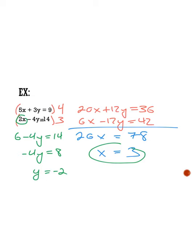Now that I have my two values, I can plug them both into the first equation to verify that what I have is correct. If I plug in 3, we get 15. And if I plug in negative 2, we get minus 6. Does that equal 9? When you simplify, we do get 9 equals 9, so I know for sure that my values of x equals 3 and y equals negative 2 are correct.